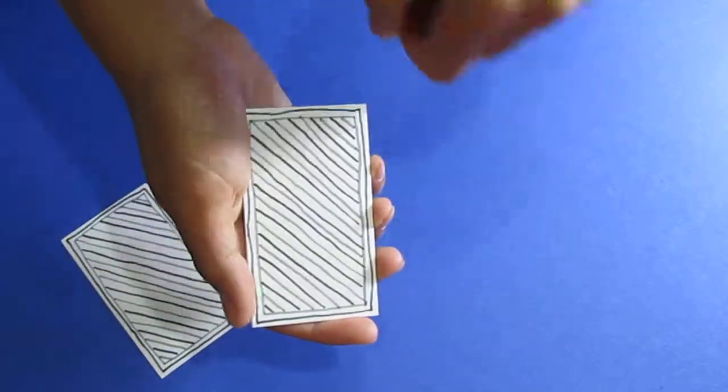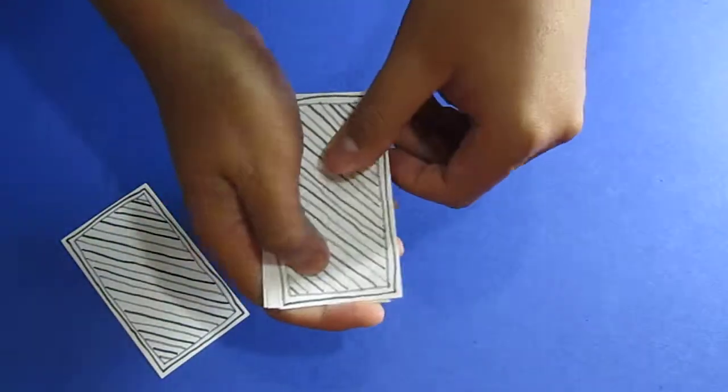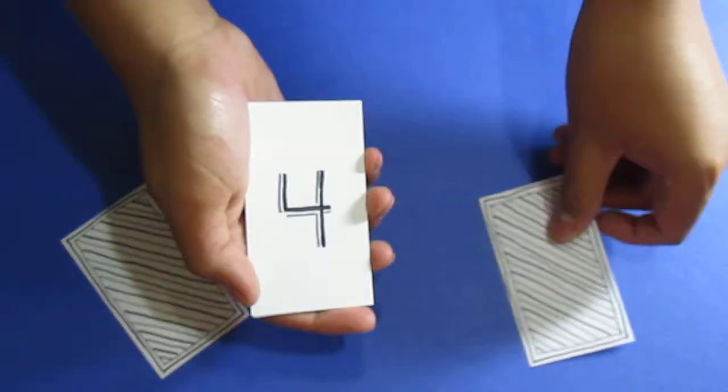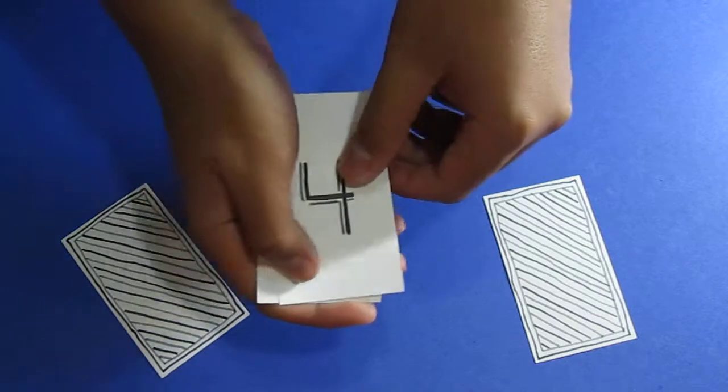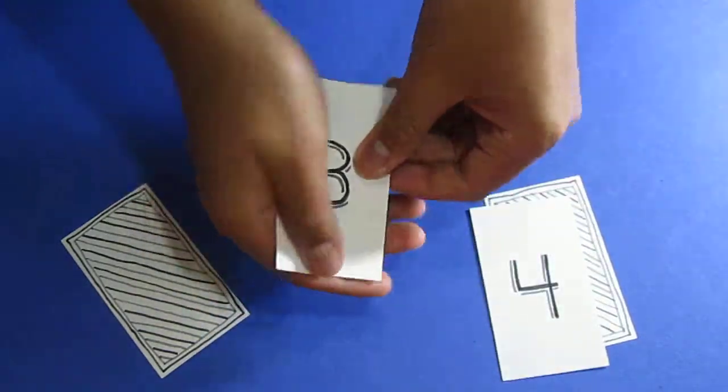Now if I take 1 from 5, what do I get? I guess you've seen this before. This is a 4. Now if I take 1 from 4, what do I get? I guess you're ahead of me, it's a 3. If I take 1 from 3, you get a 2.